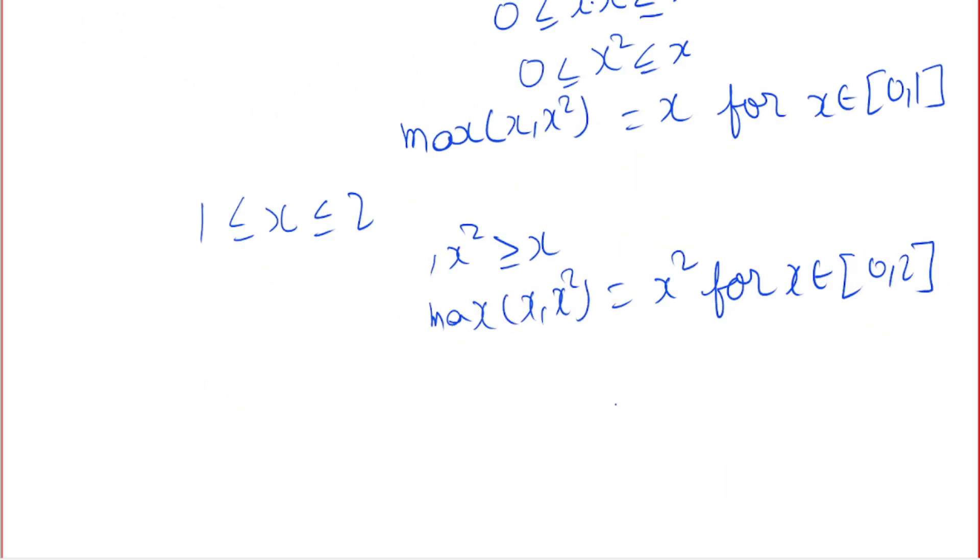So we have found the maximum of x and x squared. Let's integrate it from zero to two. So from zero to one, the maximum is x dx, and from one to two, the maximum is x squared dx.